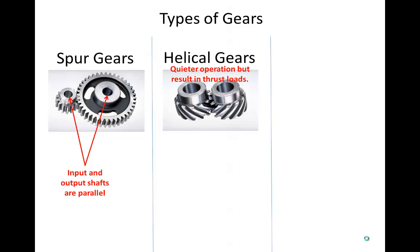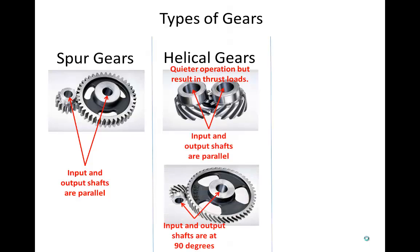However, helical gears also result in thrust loads. Since the gear teeth are angled, the forces between the meshing teeth will cause the gears to want to slide along the axis of the shaft — which is what we call a thrust load. This requires more expensive bearings to support these axial loads. Helical gears not only accommodate parallel output and input shafts, but they can also be arranged to accommodate shafts that need to be at 90 degrees to each other.